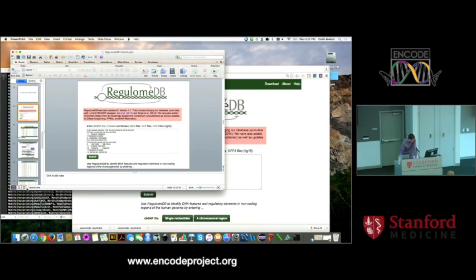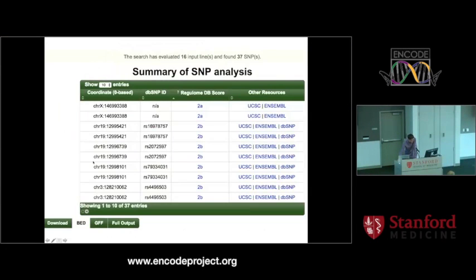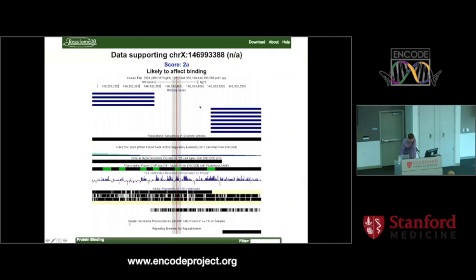After you hit submit, you'll come to a page that looks like this. For every one of the coordinates or rs IDs that you entered, you'll have a different row. It'll tell you what coordinates you put in, the dbSNP ID, and then it gives you the score I described. It'll link out to UCSC and Ensembl if you want to see a view in the genome browser. And if you click on one of these, you come to a new page that has all the data laid out visually — here is a genome browser view, and clicking it will also link to the UCSC genome browser.